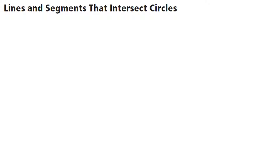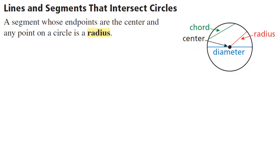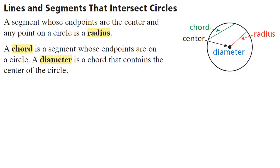Let's get down to business with the lines and line segments. Some of these, if not all of them, you might already know. The radius of course goes from the center of the circle to the circle itself. A chord is a line segment that has an endpoint on the circle at one end, and the endpoint at the other end is also somewhere on the circle. The chord itself is inside the circle except for the points where it touches the circle. And if we're so lucky that the chord goes through the center of the circle, we call it the diameter.